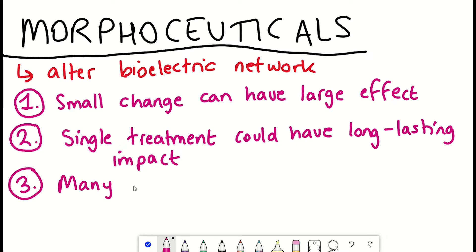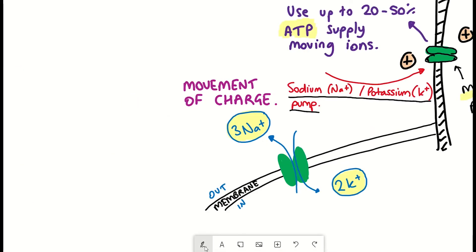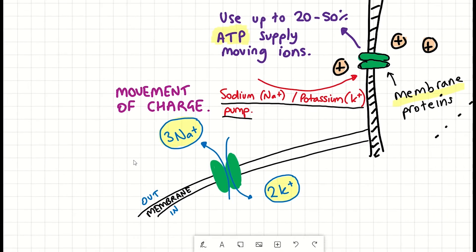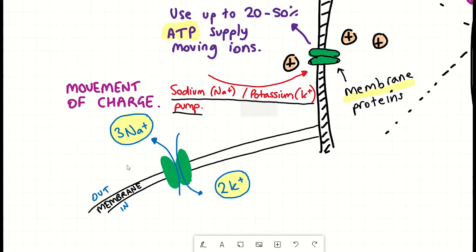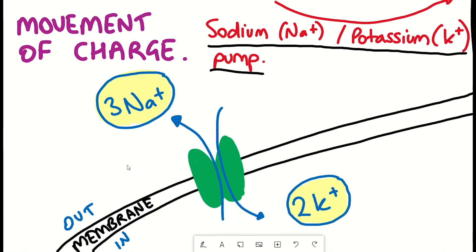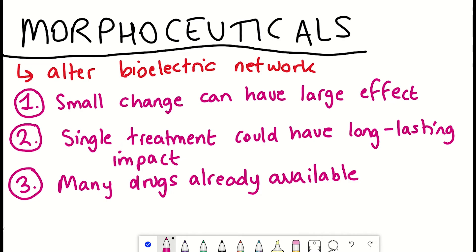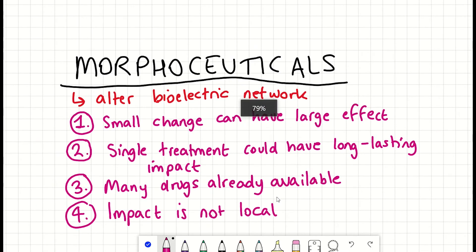Thirdly, there are many drugs already available that target these different ion channel proteins. They're so-called druggable. Obviously, you would first have to work out which channels you'd want to open and close and whereabouts in the body before you do it. And then lastly is the idea that the impact may not necessarily be local, as voltage patterns can also propagate. So you could have maybe long-range control and this may help to target hard-to-reach sites. However, this also may be a complication if you wanted to target a specific place without having these long-range impacts.